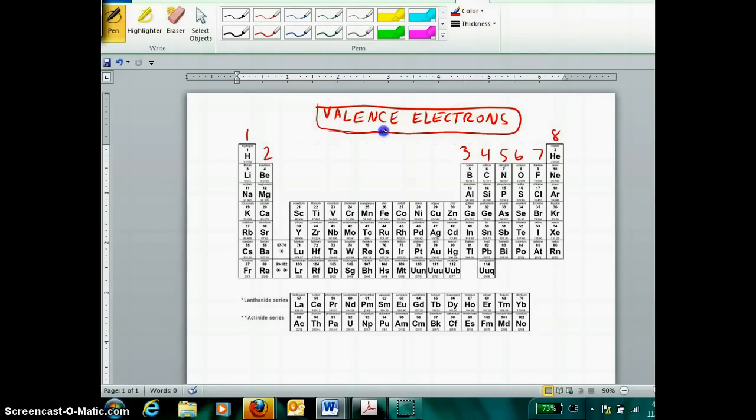First of all, what are valence electrons? A lot of people equate the word valence with outermost, but that's really not the meaning of the word valence. The word valence literally is a reference to the atom's reactivity with other atoms. How an atom behaves when it encounters another atom.